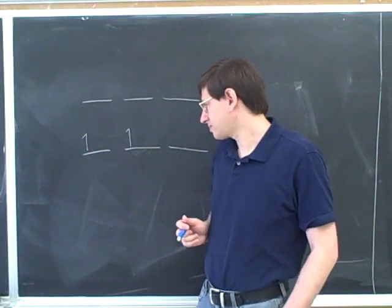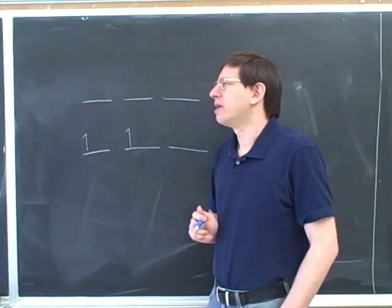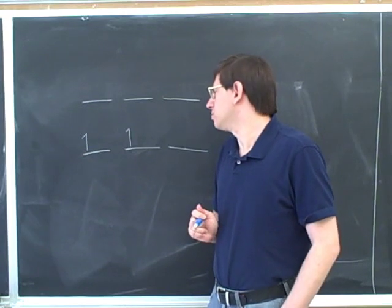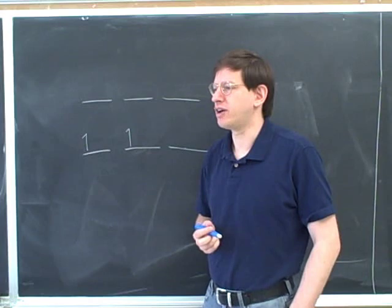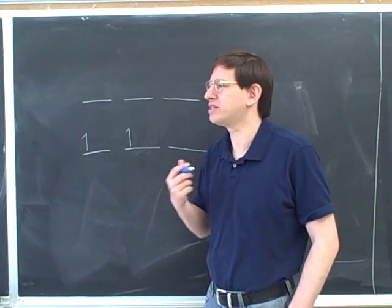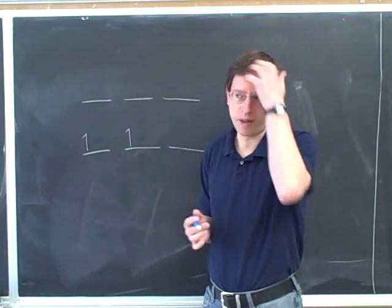Hund's rule says that if you have multiple orbitals with the same energy, well, do electrons like to be close or far from other electrons? Far. Far. Why is that? Because they have the negative charge. Yeah, they're all negative. So negatives repel each other.